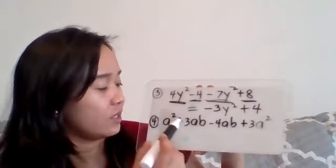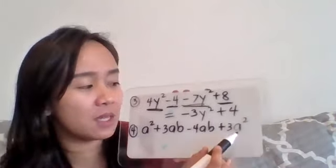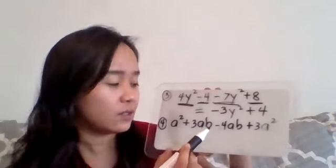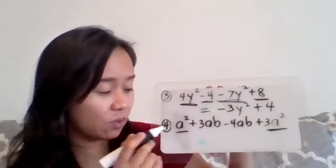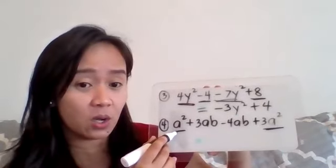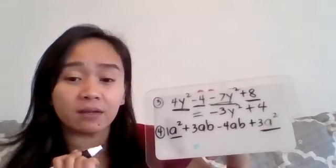Number four. Let's check which ones have the same term. So this is a² + 3ab - 4ab + 3a². So the ones that are a² are a² and 3a², and the ones with ab are 3ab and -4ab.